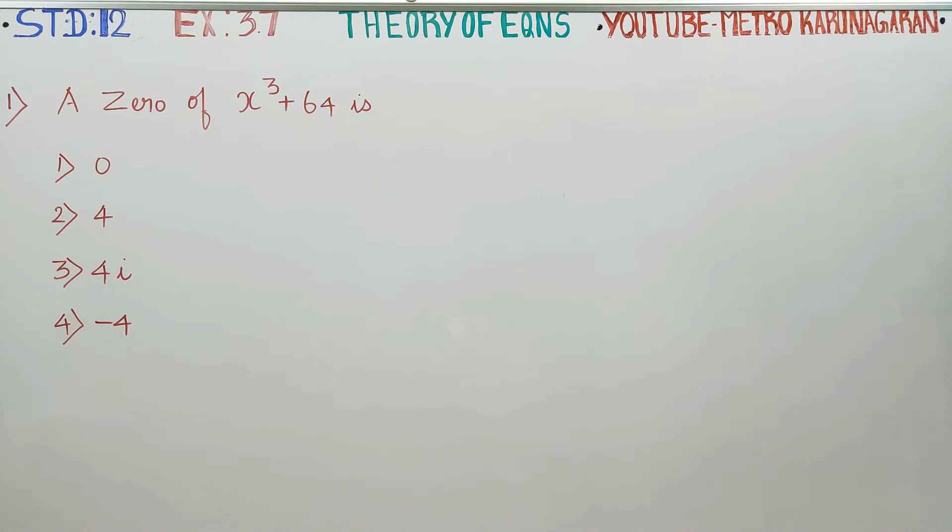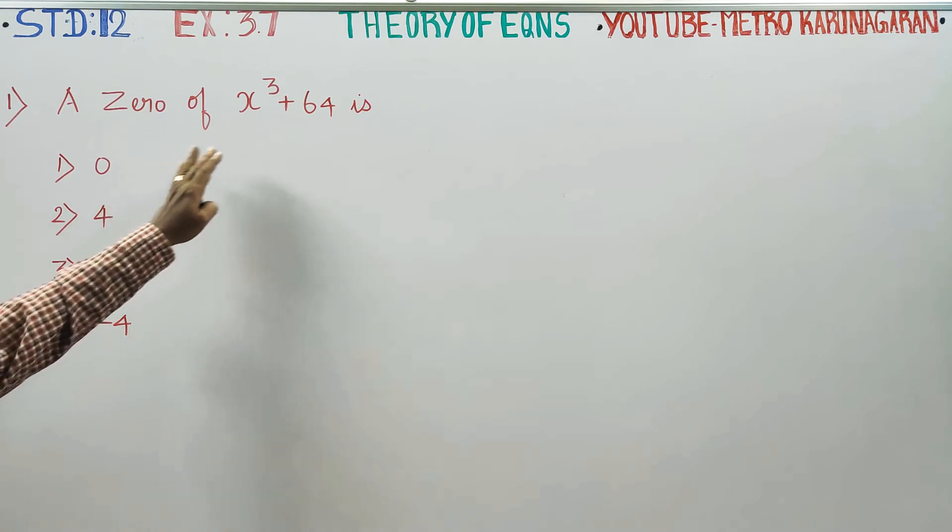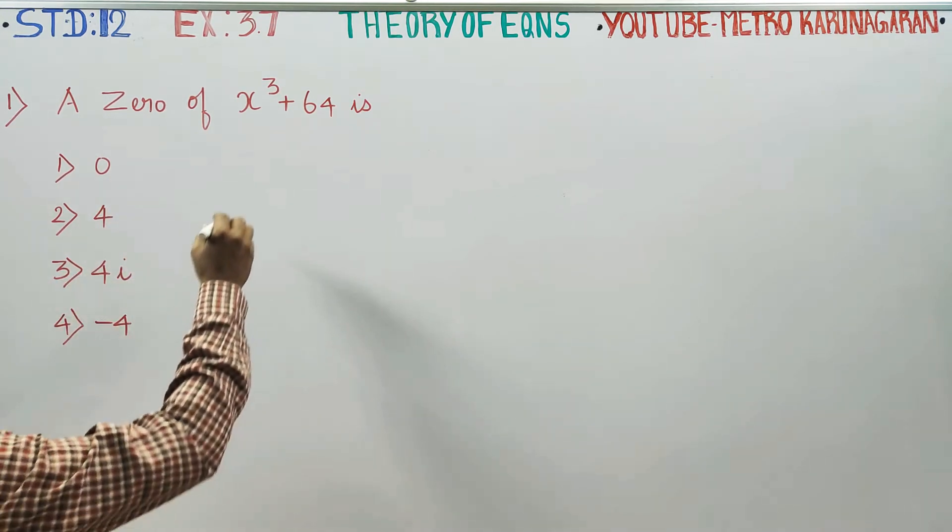Dear 12th standard students, in exercise number 3.7, choose the best answer. In theory of equations, problem number 1: a zero of x³ + 64 is?